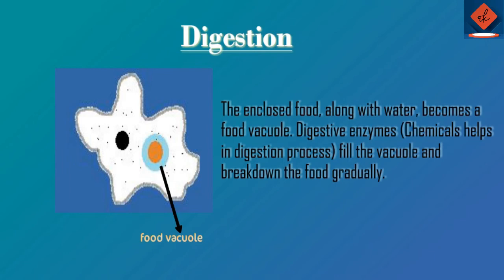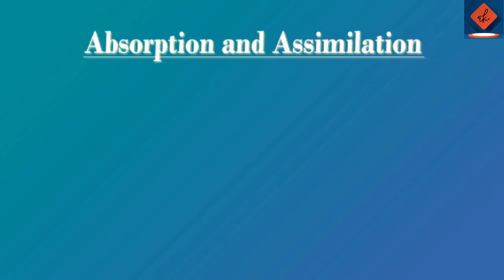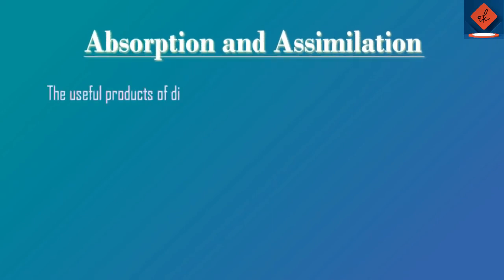Digestive enzymes are chemicals that help in the digestion process. They fill the vacuole and break down the food gradually. The food that the amoeba has brought in is broken down slowly. After that comes absorption and assimilation.